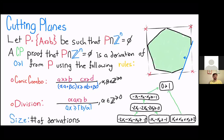The size of the proof is just the number of derivations in it. The depth of the proof — another measure we're interested in — is the longest root-to-leaf path. Just like how in circuit complexity, depth captures a notion of parallelizability, the depth of proofs in proof complexity captures an analogous notion of parallelizability of algorithms captured by these proofs.